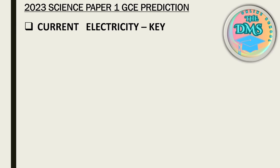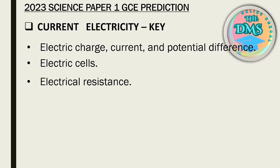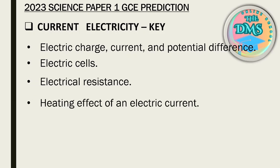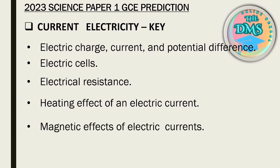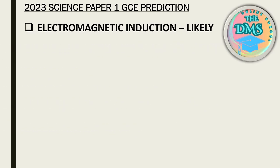Current Electricity is a key topic — it does not miss; it comes year in, year out. The subtopics under here are: electric charge, current and potential difference; electric cells; electric resistance; heating effect of an electric current; and magnetic effects of electric currents.